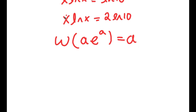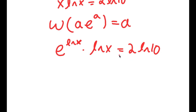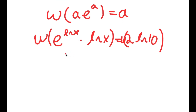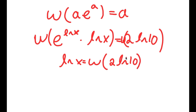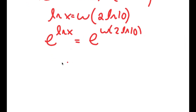So I rewrite x as e to the power of ln x. Now this times ln x is equal to 2 times ln 10. This is now in the form a times e to the power of a. So if I take the Lambert W function on both sides, this results in ln x equaling W of 2 times ln 10. And if I take e to the power of both sides, I get e to the power of ln x is equal to e to the power of W of 2 ln 10. And e to the power of ln x equals x.